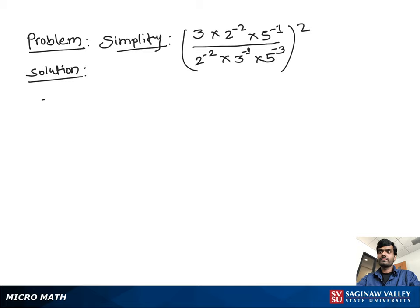Simplify 3 times 2 to the negative 2 times 5 to the negative 1, divided by 2 to the negative 2 times 3 to the negative 1 times 5 to the negative 3, all to the second power.